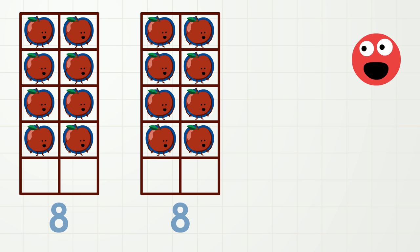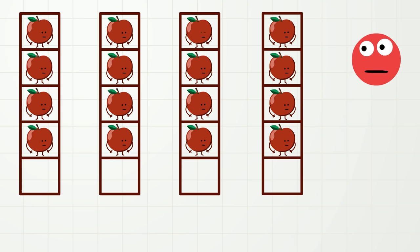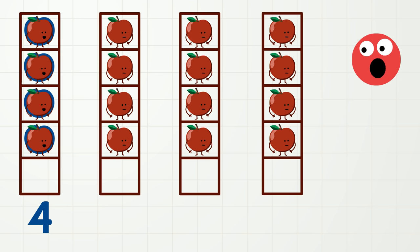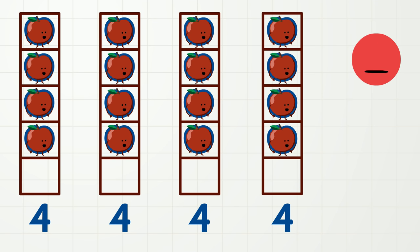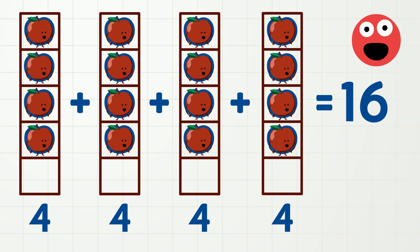Okay, one last time! Move apples! Oh cool! Now we have one, two, three, four apples here, and the same number four apples here, and the same number four apples here! Four groups of four! Four plus four plus four plus four is 16! So the number 16 can also be made up of the numbers four, four, four, and four!